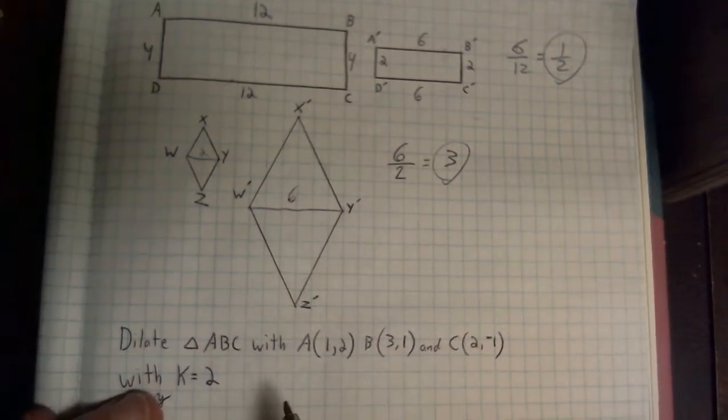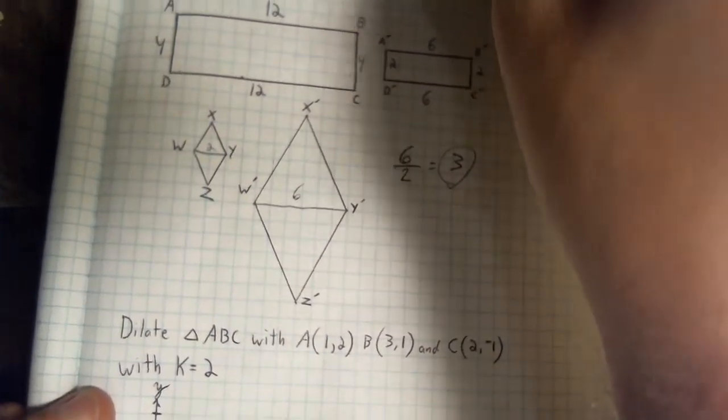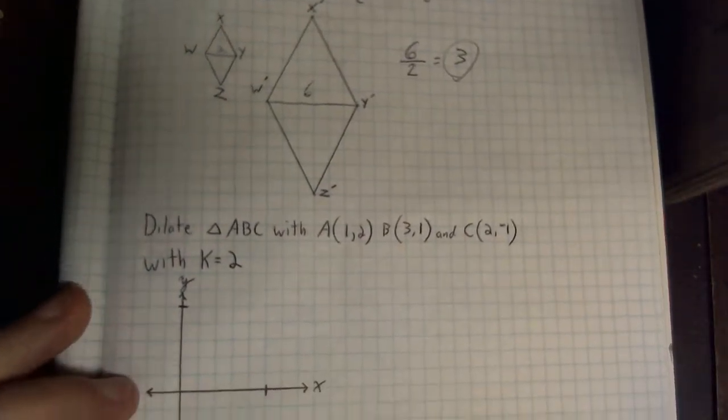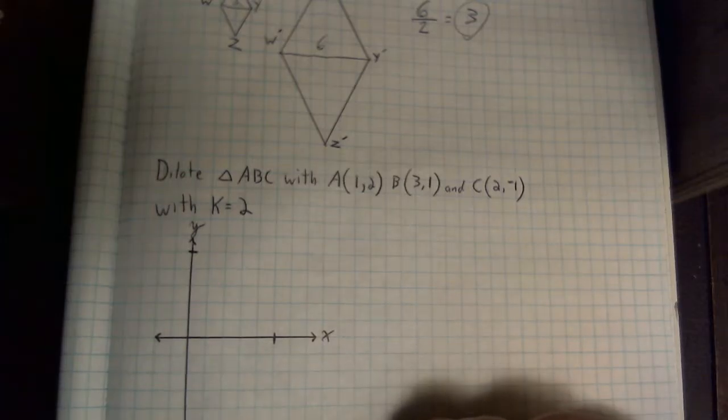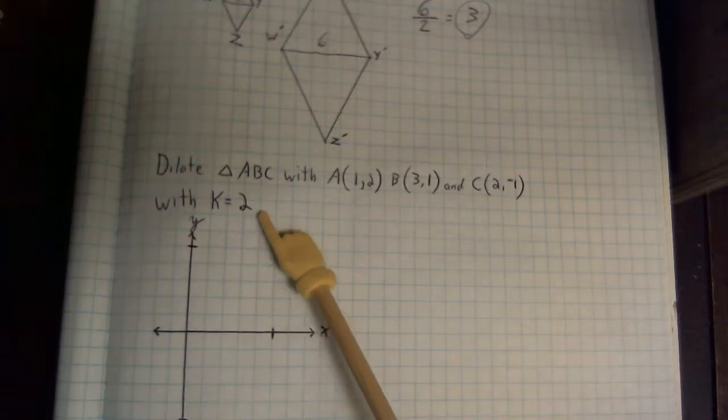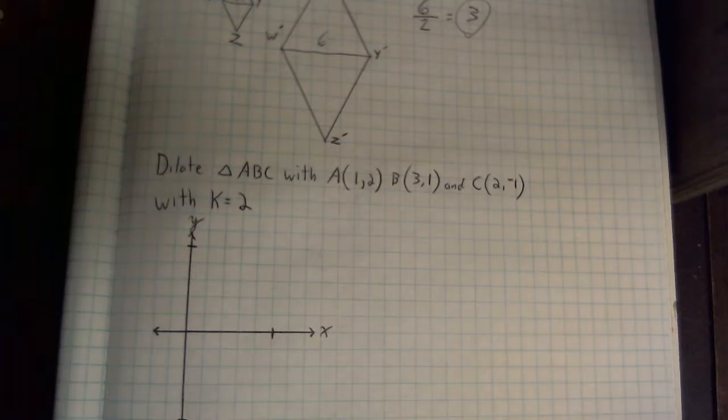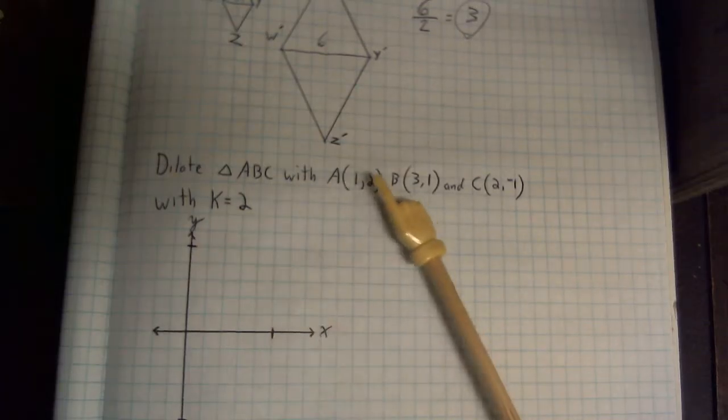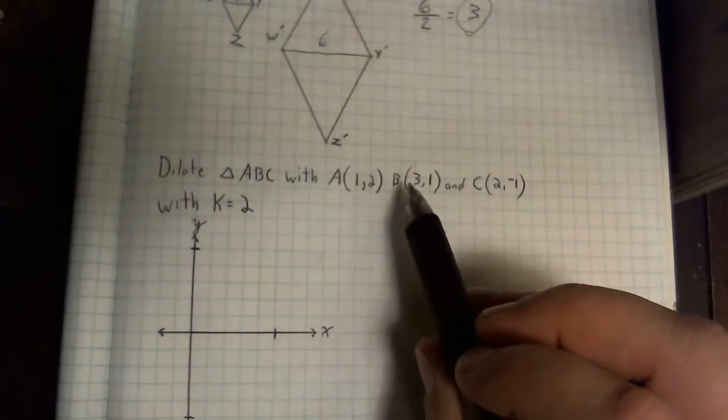Now when we do dilations, they're going to be giving us a scale factor to work with. In this particular example, they give us some coordinates for a triangle, and then they tell us that we have a scale factor, which they always use the letter K to represent scale factor. We want it to be twice the size. Nice thing about scale factor is these are all multiplication problems. We're going to take our scale factor and we're going to multiply each of the coordinates by the scale factor.